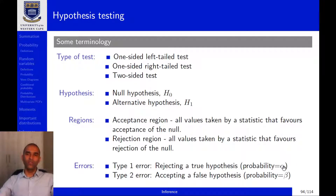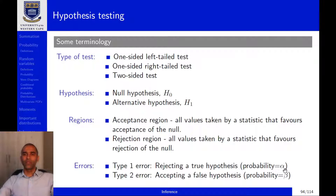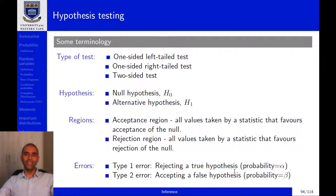The significance level that we choose is directly related to rejecting a true null hypothesis — in fact it is the probability of rejecting a true null hypothesis. By reducing the alpha value we reduce that probability, but this does not come cost-free. There's a trade-off: whenever we reduce the probability of committing a Type 1 error, we necessarily increase the probability of committing a Type 2 error.